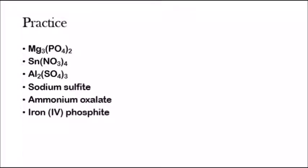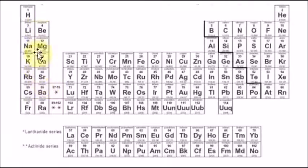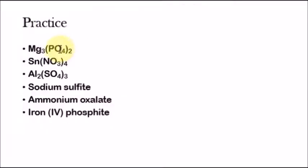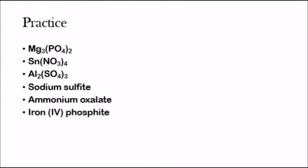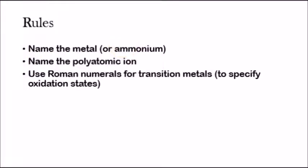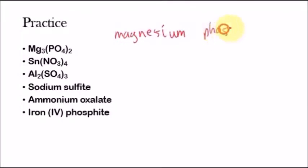Let's look at a few problems and name them. We have a metal, magnesium, which is on the left side of the zigzag line of the periodic table. We have PO4, a polyatomic ion — PO4 three minus, phosphate. So we have metal plus polyatomic ion: ternary salt. Magnesium has only one oxidation state, so we don't need a Roman numeral. We name the metal — magnesium — and then name the polyatomic ion — phosphate. Easy: magnesium phosphate.